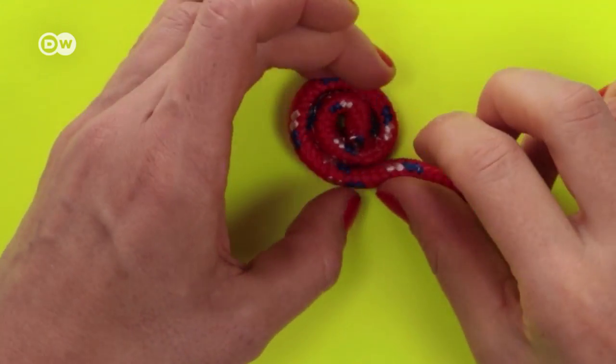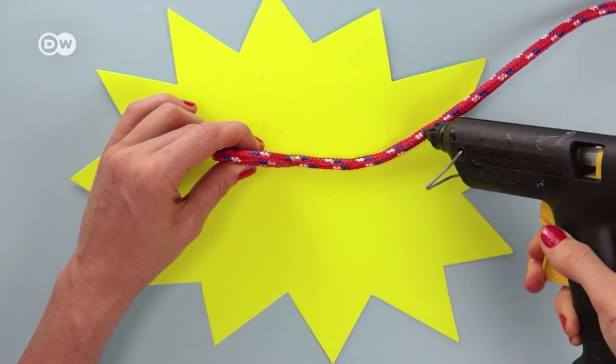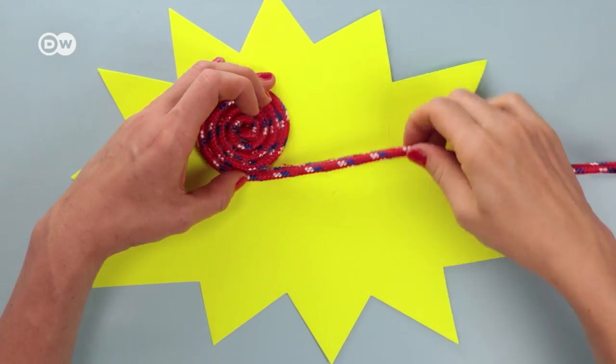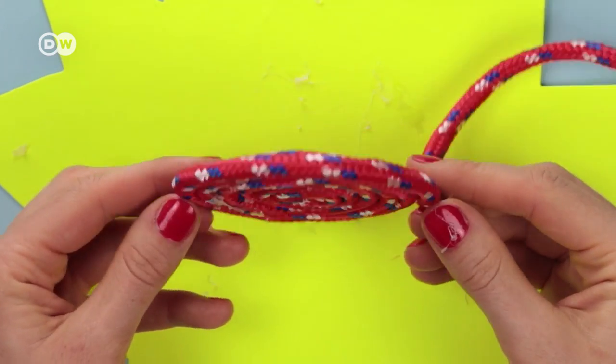Keep going this way to form an even larger spiral. Incidentally, you could also make a pretty coaster this way if you were to stop at this point.